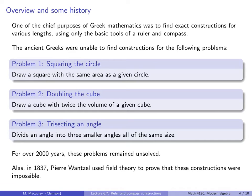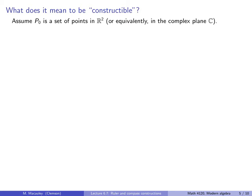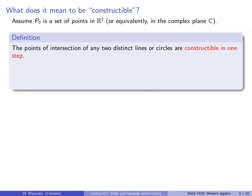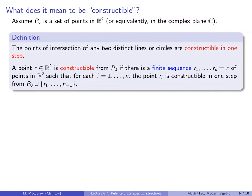I hope you're as impressed with this as I am, because it's just remarkable that this very basic problem that stumped the ancient Greeks and stumped mankind for over 2,000 years has a very simple solution in terms of field theory. First, we need to ask what it means to be constructible. Let's start by assuming that P-naught is a set of points in R². The points of intersection of any two distinct lines or circles are constructible in one step.